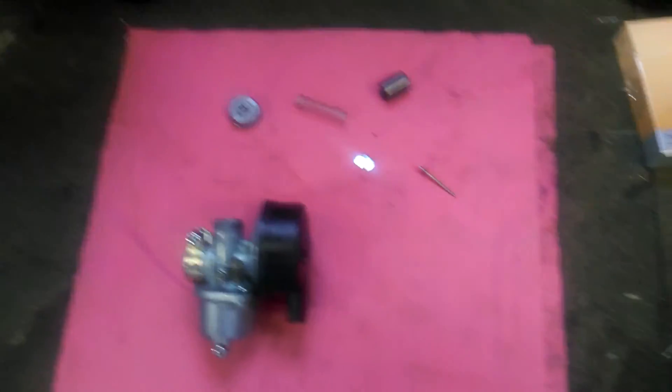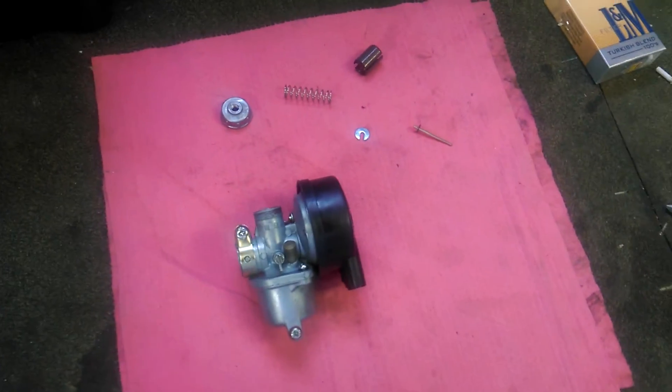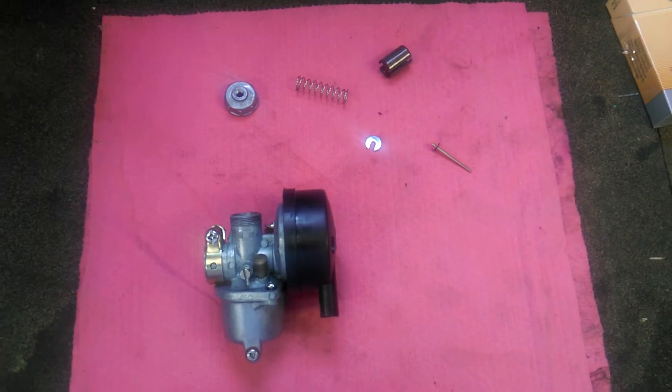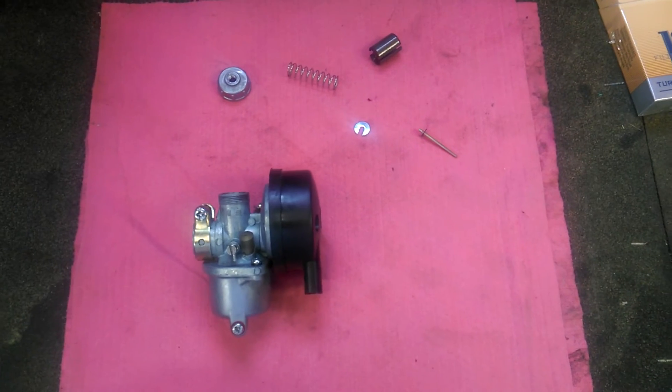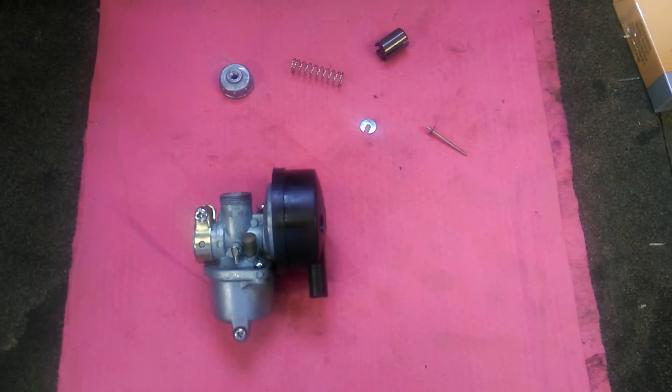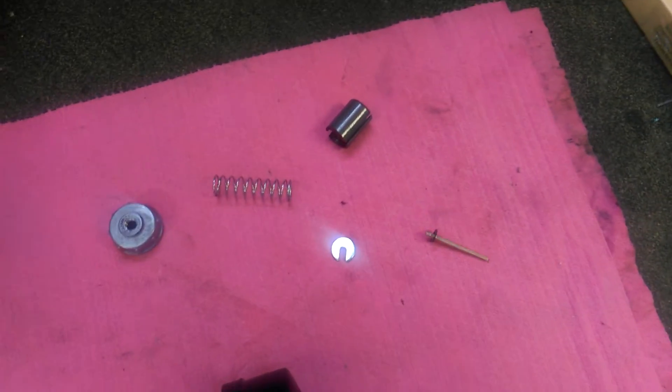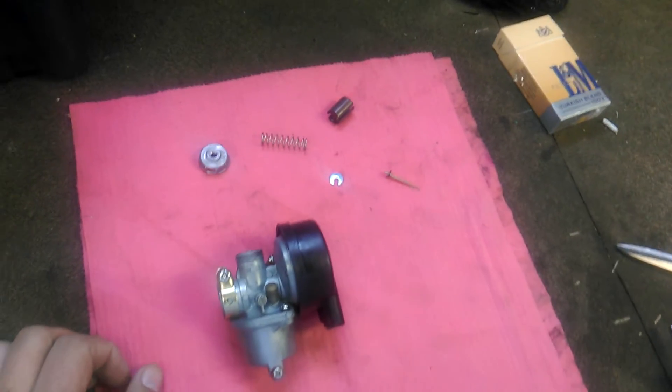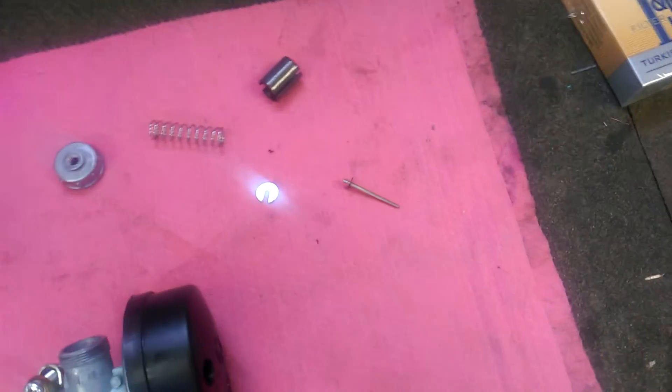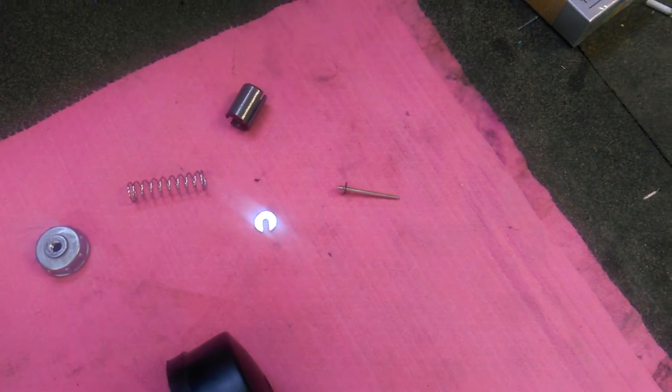What we have here is a partially disassembled stock NT carburetor for a motorized bicycle engine. This video is the short version on how to adjust the needle clip on your carburetor slide needle.